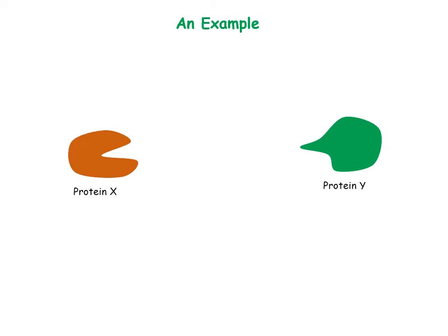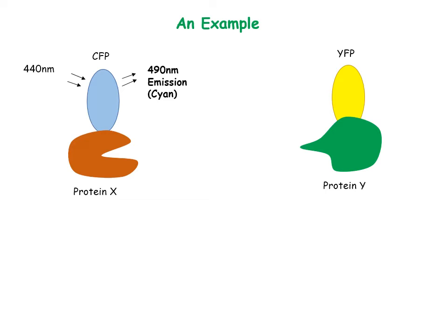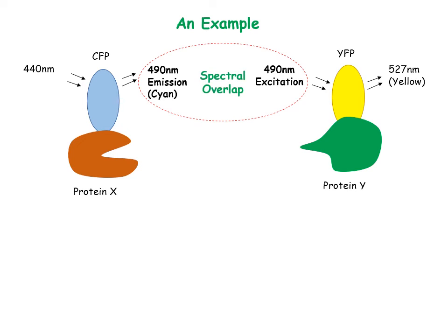Here is an example. Two proteins whose interaction needs to be studied are tagged with two different fluorophores — CFP and YFP in this case. CFP absorbs light at 440nm and emits at 490nm, which is cyan fluorescence. Similarly, YFP absorbs light at 490nm and emits at 527nm, which is yellow fluorescence. The emission wavelength of CFP acts as the excitation wavelength for YFP — that is, they show spectral overlap.